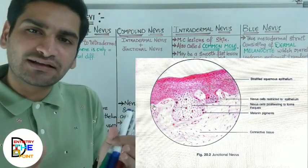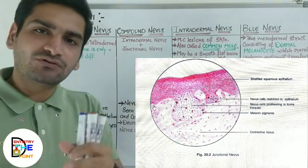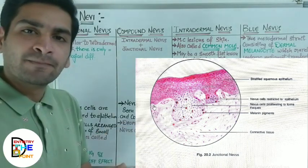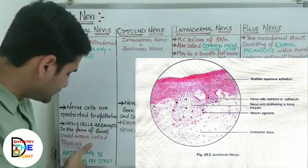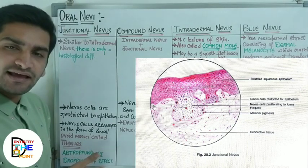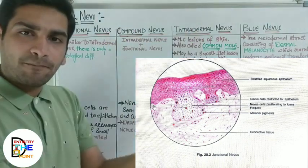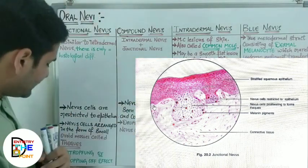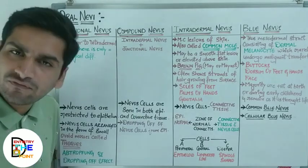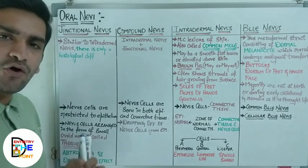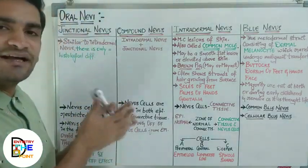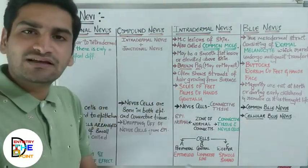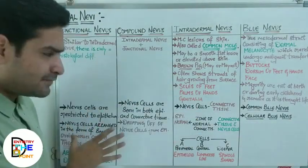The theeks of nevus cells at the tips of the rete pegs will be seen as the atrofen or dropping-off effect. It appears as if the nevus cells are going to drop into the connective tissue, but they do not actually cross — it just gives that effect. This effect is called the dropping-off effect. An MCQ can be asked: 'dropping-off effect is seen in which lesion?' — the answer is junctional nevus.